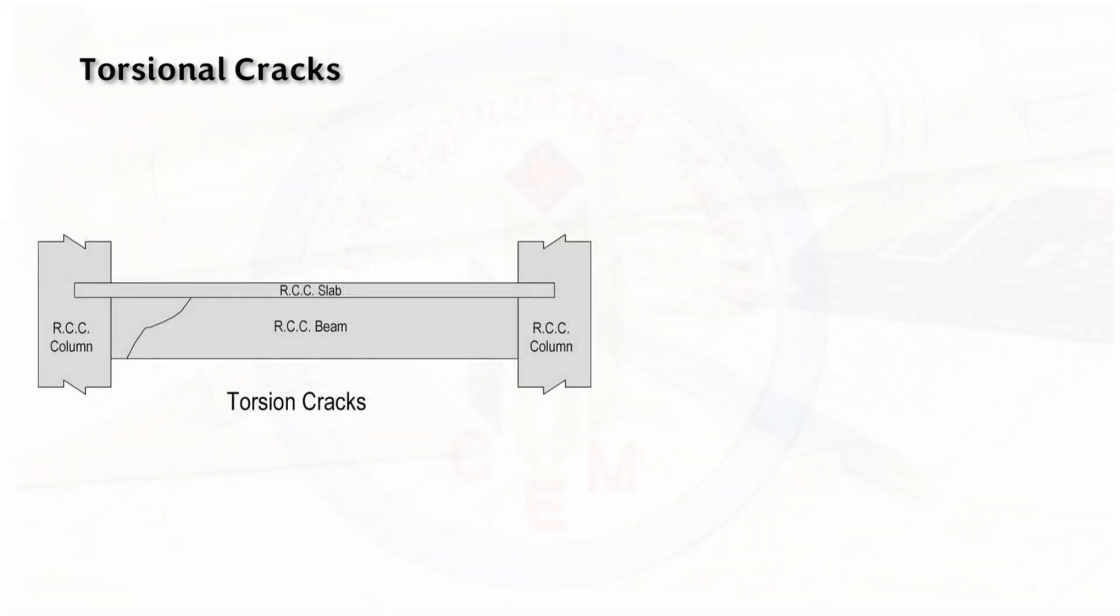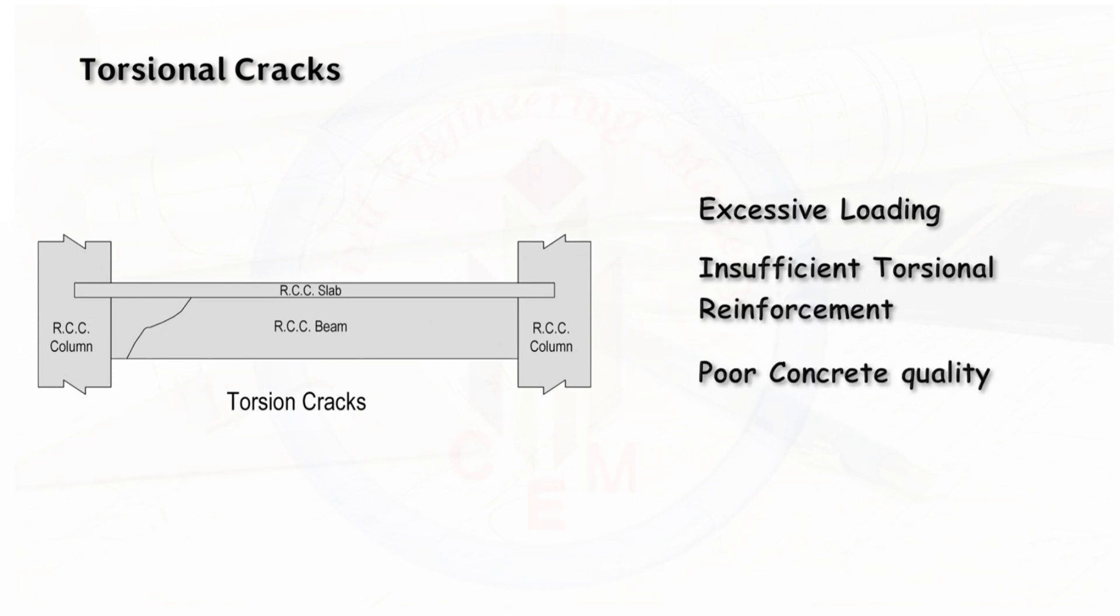The reasons for torsional cracks are excessive loading, insufficient torsional reinforcement, poor concrete quality, and inadequate beam size.